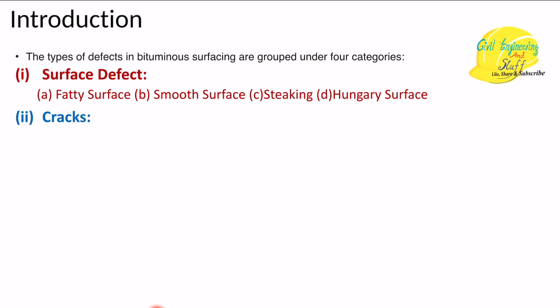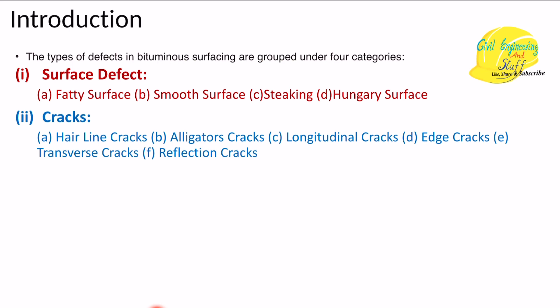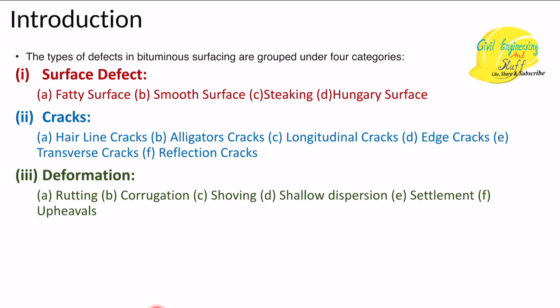In Part 2, we discussed in detail the variety of cracks that can happen in the flexible pavement - line crack, alligator cracking, longitudinal cracking, edge cracking, transverse cracking, and refractive cracking. Part 3 was about the deformation that can happen in flexible pavement, covering rutting, corrugation, shoving, shallow depression, settlement, and upheaval.